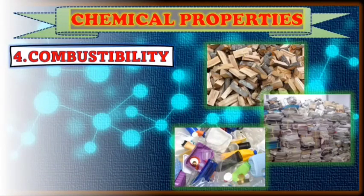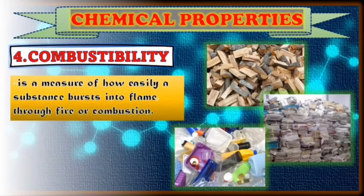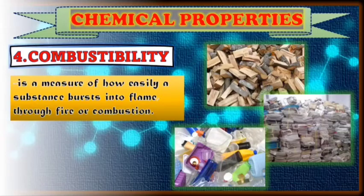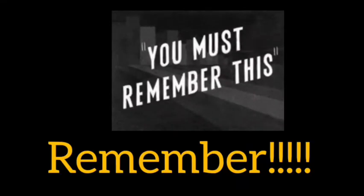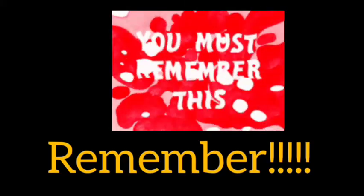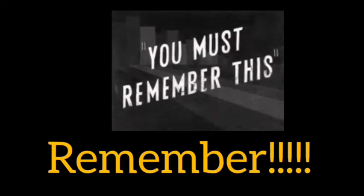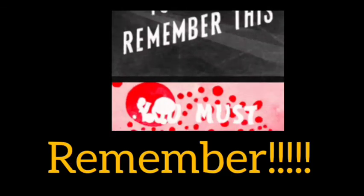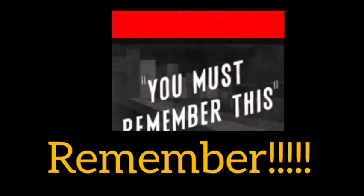Number four is what you call combustibility — a measure of how easily a substance bursts into flame through fire or combustion. Materials like wood, cloth, plastic, and paper are easily burned. Take note, class, that materials are said to be useful when they serve their purpose. But some useful materials may also bring hazard to us. These materials may bring harm to your health, environment, and other organisms when not used properly. That's why you as a person should be careful when handling and using different materials to avoid those incidents.